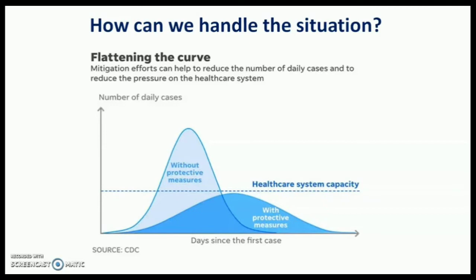So if the number of cases per day is less, then healthcare facilities can be made available to everyone and a suitable standard of care can be achieved. That is why it is being said to flatten the curve. You can flatten the curve by staying at home and not contacting the disease — that is the only thing.